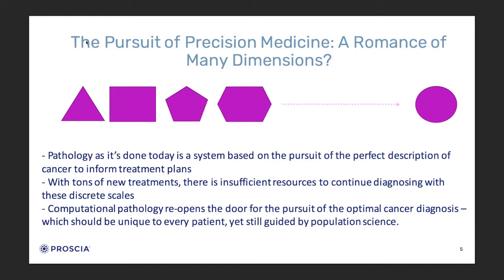Has anybody here read Flatland? I was trained in classical mathematics, which is why I now give talks at computer science and medical conferences. The idea from the book is this: in two-dimensional space, if you're a triangle, your goal is to become a circle. The way you become a circle is by adding edges. But you can add infinitely many edges and you'll never become a perfect circle. I like making the analogy of precision medicine being similar to this pursuit.